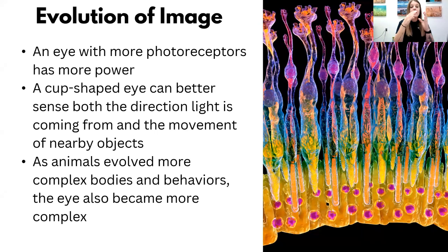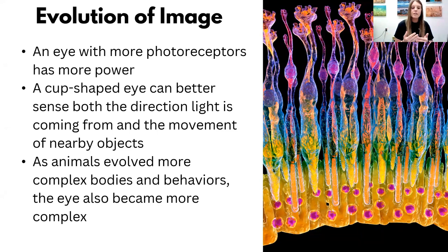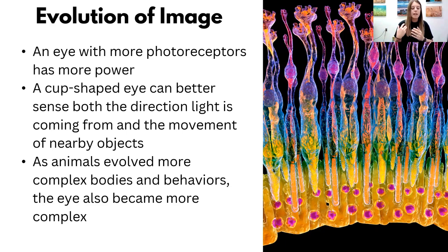Being able to see shapes and images clearly is a very advanced optic system. The more photoreceptors an animal has, the more power to see. When we talk about the shape of an eye, a cup-shaped eye can better sense the direction of light and where movement is coming from. As bodies evolved, animals became more complex in their adaptations and behaviors, so they needed more complex eye systems. Special cells in the retina — photoreceptors — help convert light into signals sent to the brain. If animals have more photoreceptors, more signals go to their brain and they're just better at it.